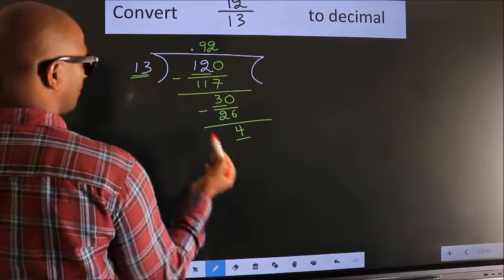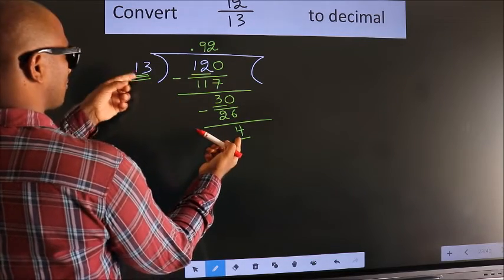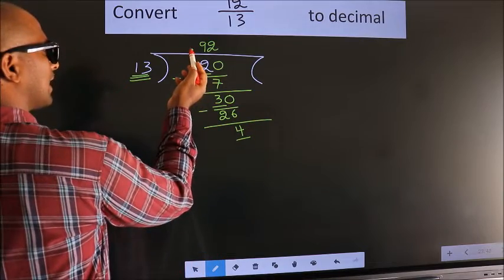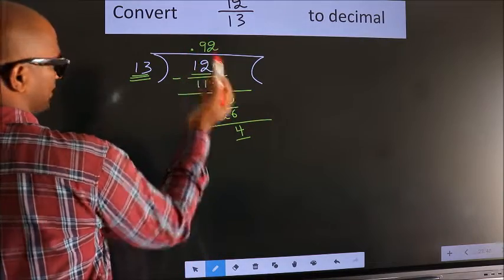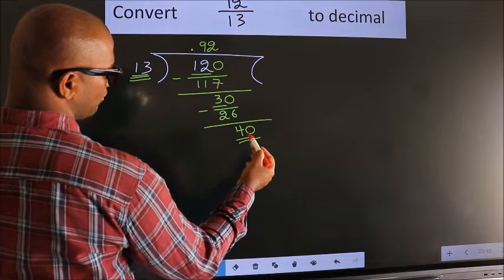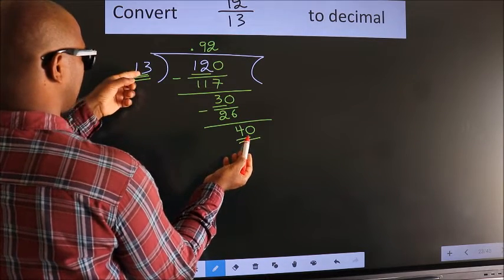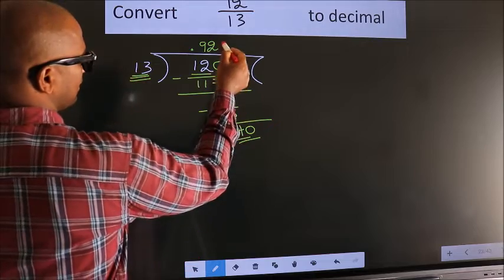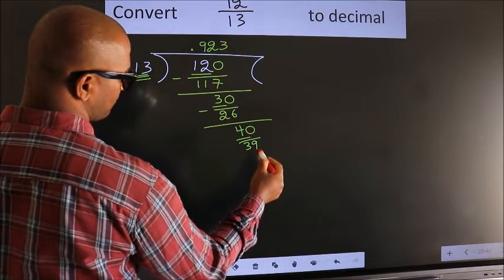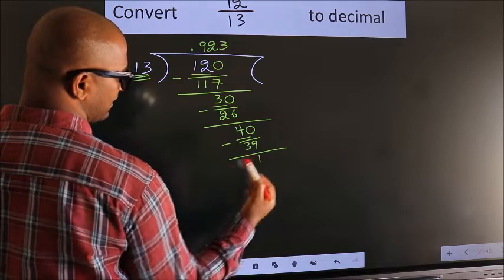Here we have 4, here 13. 4 is smaller than 13. And we already have the decimal, so we can directly take 0. So 40. A number close to 40 in the 13 table is 13 threes, 39. Now we subtract. We get 1.